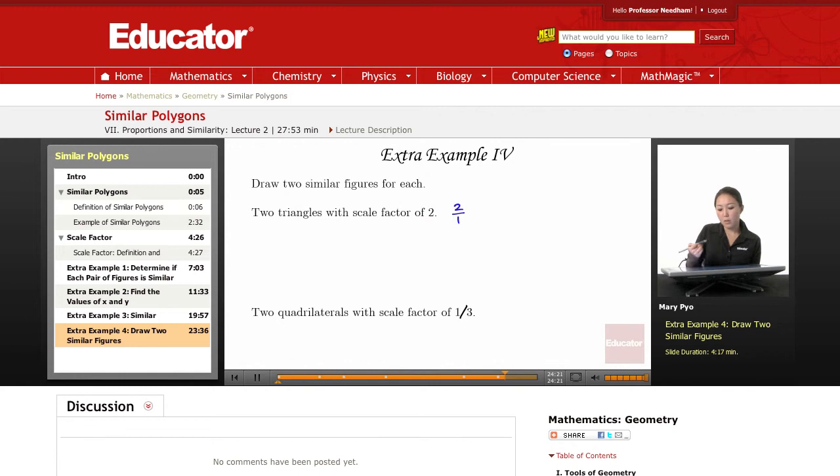Now, what does that mean? If the scale factor is 2 to 1, that means if one side of my first triangle, let's say, is 10, the corresponding side of the other triangle would be 5. So this just means that my first triangle is going to be twice as big as my second triangle.